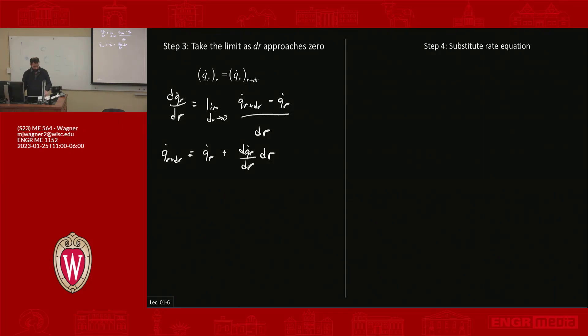So now we can use this equation, this part of the equation here, and let's sub that back into our energy balance up here at the top. This thing up here. And we end up with the following equation: Q dot R equals Q dot R plus DQ dot R DR times DR. Q dot R appears on both sides, so that goes away.